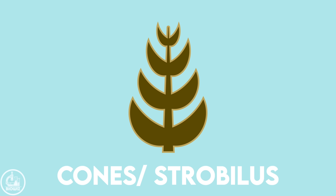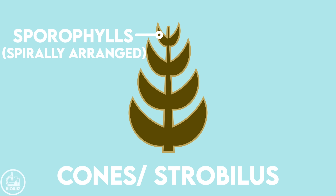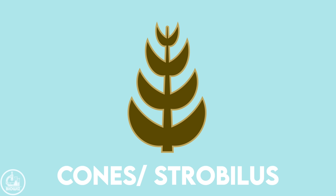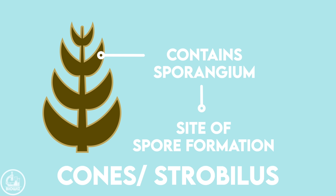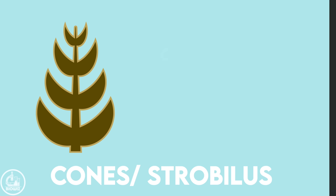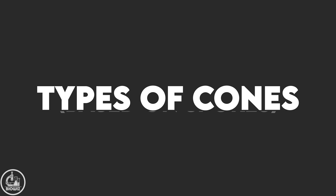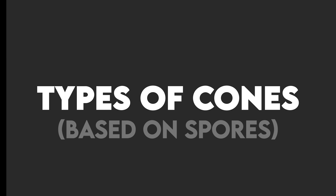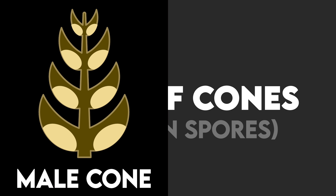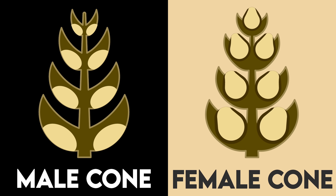The cones, or strobilus, are made up of modified leaves called sporophylls, which are spirally arranged around a common axis. These cones are the site of spore formation in gymnosperms. The cones can be classified into two types depending on the type of spore formed in them, and these are called male and female cones respectively.